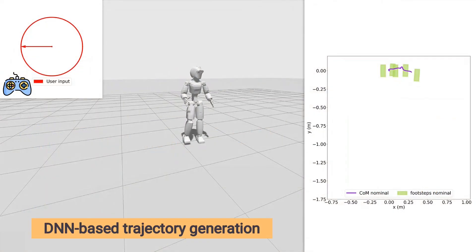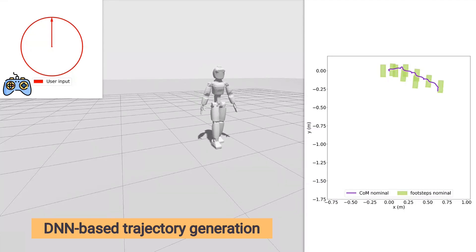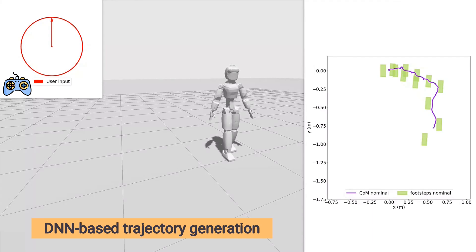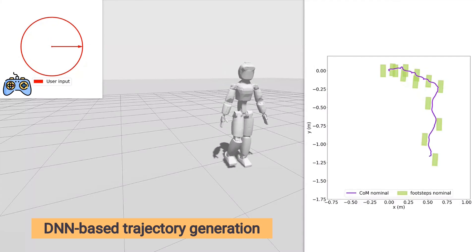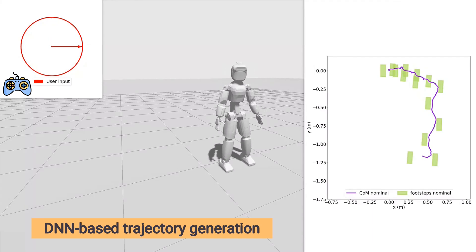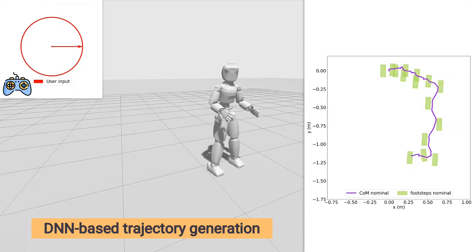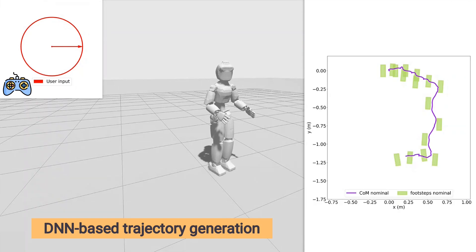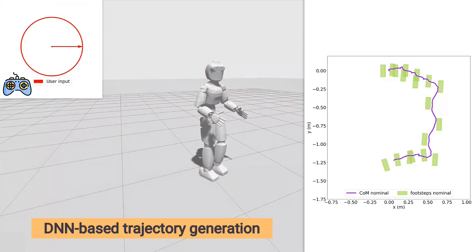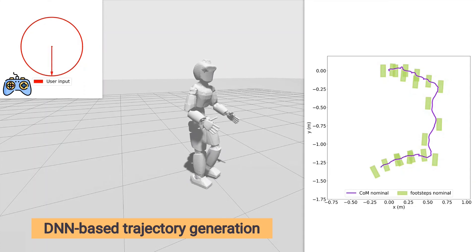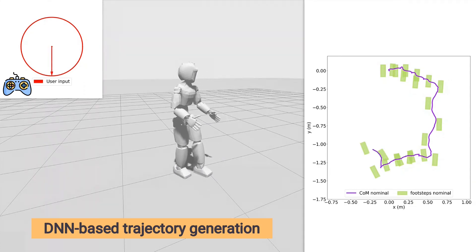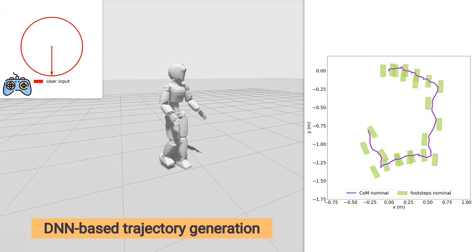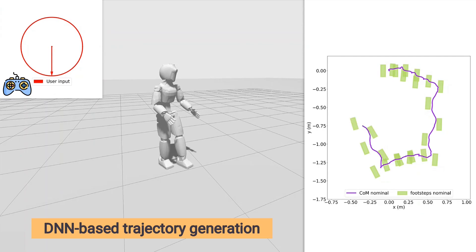The following video demonstrates the trajectory generation process. It shows how the neural network, trained on human motion capture data, produces initial walking patterns for the robot. These trajectories embody the stylistic qualities of human gait and serve as input to the subsequent layers, enabling the robot to replicate expressive and natural human-like movements.